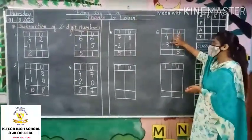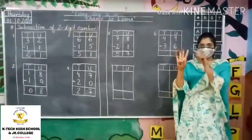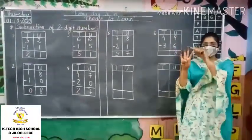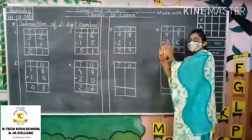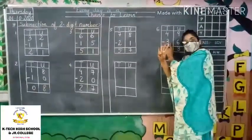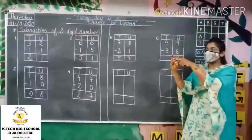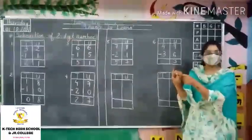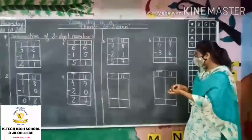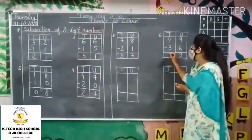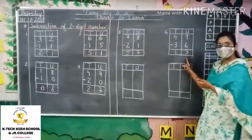Tens part: 4 minus 3. Remove 4 fingers — 1, 2, 3 and 4. Minus or remove 3 fingers from them — 1, 2 and 3. How many fingers are remaining? 1. So write here 1. Therefore the answer is 13.